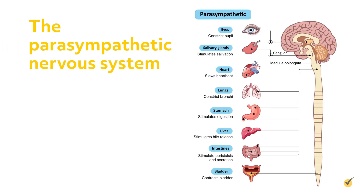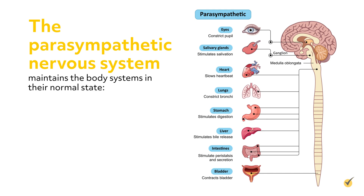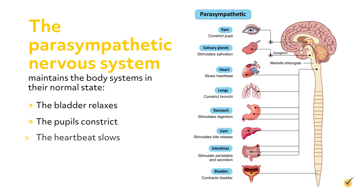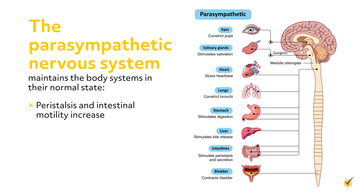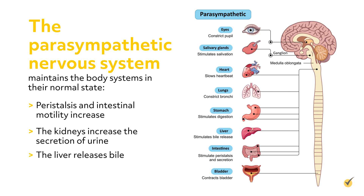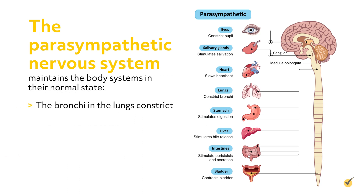The parasympathetic nervous system maintains the body systems in their normal state. The bladder relaxes. The pupils constrict. The heartbeat slows. Peristalsis and intestinal motility increase. Kidneys increase the secretion of urine. The liver releases bile. The bronchi in the lungs constrict, salivation increases, and digestion is stimulated.